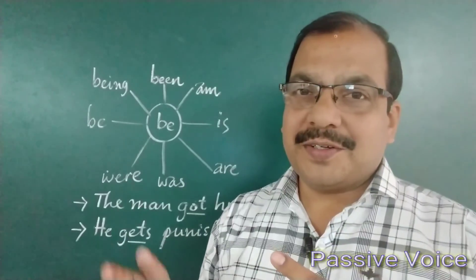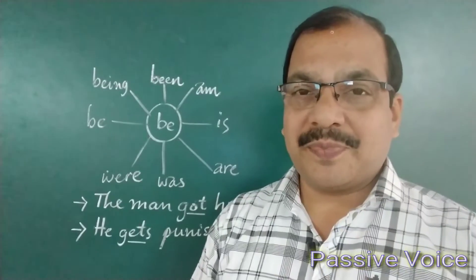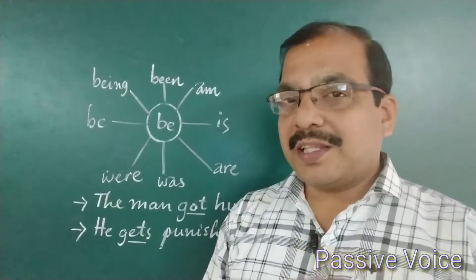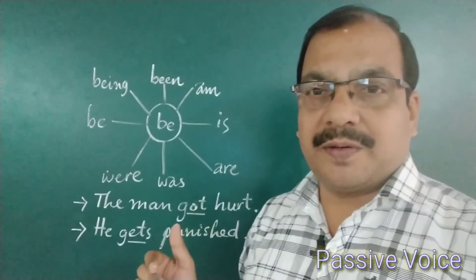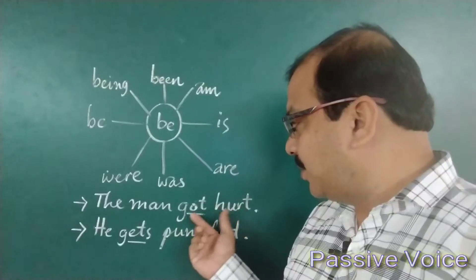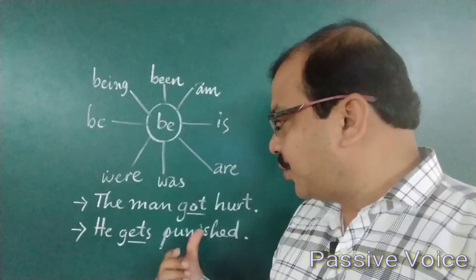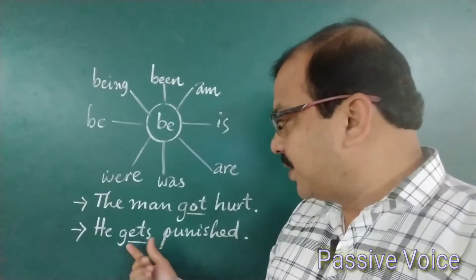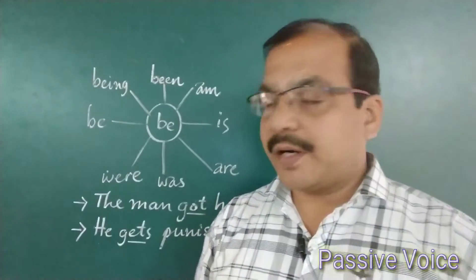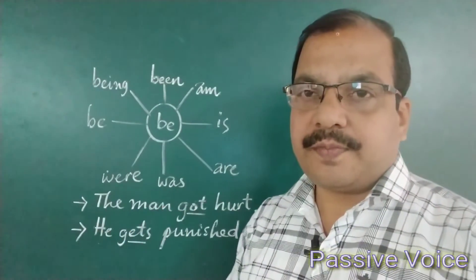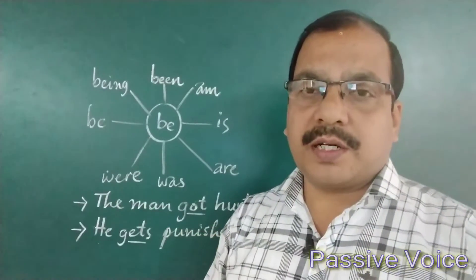Sometimes instead of a be-verb, we use the 'get' verb. For example, 'The man got hurt,' 'He gets punished,' compared to 'He is punished.' Instead of a be-verb, we sometimes use 'get,' but remember: when using 'get' in place of 'be,' we never use the agent — we never say 'by someone.'